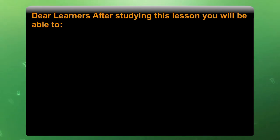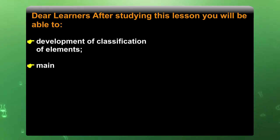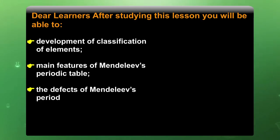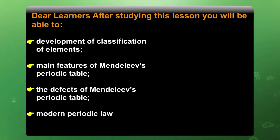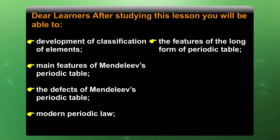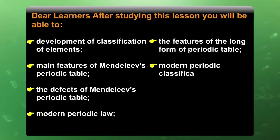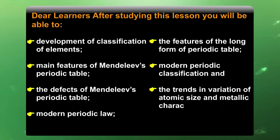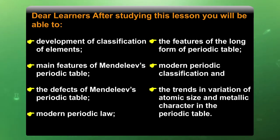Dear learners, after studying this lesson, you will be able to understand about the development of classification of elements, the main features of Mendeleev's periodic table, the defects of Mendeleev's periodic table, modern periodic law, the features of the long form of periodic table, modern periodic classification, and the trends in variation of atomic size and metallic character in the periodic table.